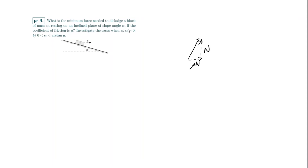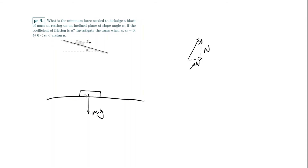The problem: what is the minimum force needed to dislodge a block of mass m resting on an inclined plane of slope angle α, if the coefficient of friction is μ? Investigate cases (a) α = 0 and (b) 0 < α < arctan μ. For case (a), the block is on a flat surface. Forces acting are gravity mg downward, and the combined normal+friction reaction at angle arctan(μ) from vertical.